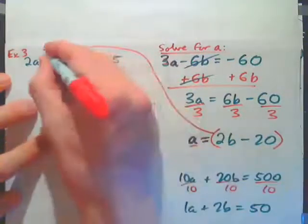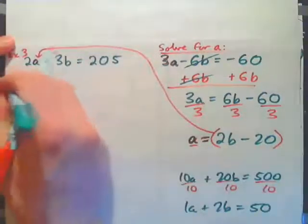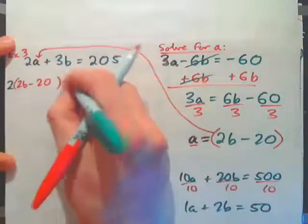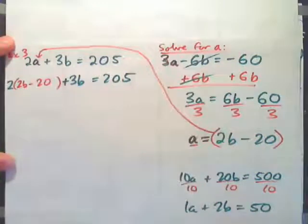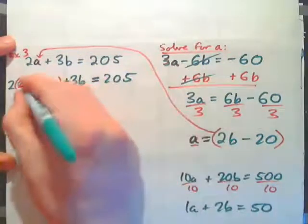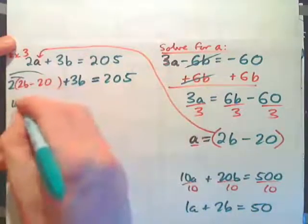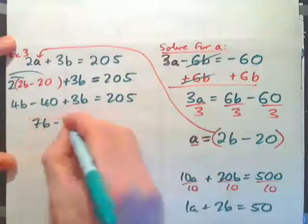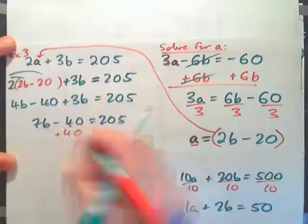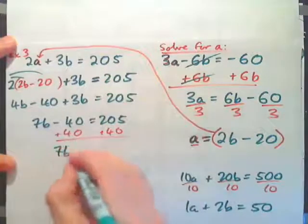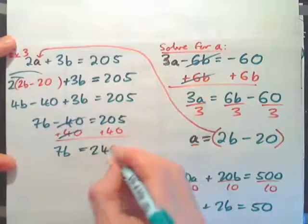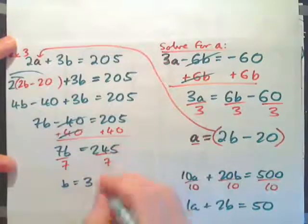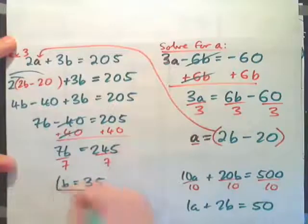We plug the expression for a in for a — not for b — because it says a equals that. So we have 2 times (2b minus 20) plus 3b equals 205. Multiply 2 in: 4b minus 40 plus 3b equals 205. Add like terms: 7b minus 40 equals 205. Add 40 to both sides: 7b equals 245. Divide both sides by 7 and we get b equals 35 cents.